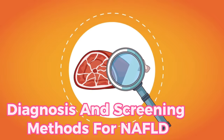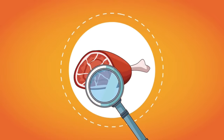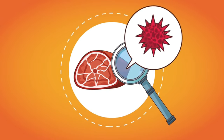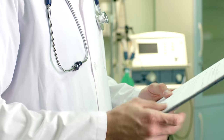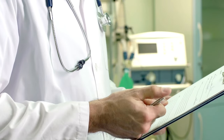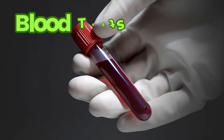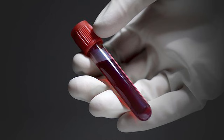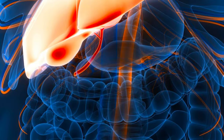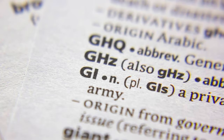NAFLD lurks in the shadows, often stealthily progressing without overt symptoms until later stages. Unveiling its presence requires a judicious approach to diagnosis and screening. The journey towards NAFLD diagnosis often begins with blood tests, which can reveal abnormalities in liver function. Elevated liver enzymes such as alanine aminotransferase (ALT) and aspartate aminotransferase (AST) may signal liver inflammation or damage. Markers such as gamma-glutamyl transferase (GGT) and alkaline phosphatase can provide further insights into liver health.